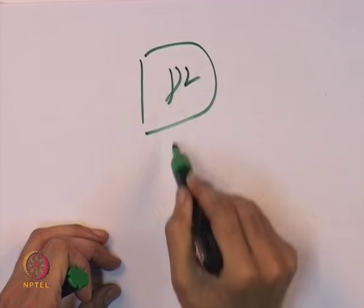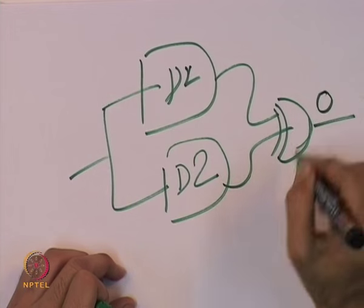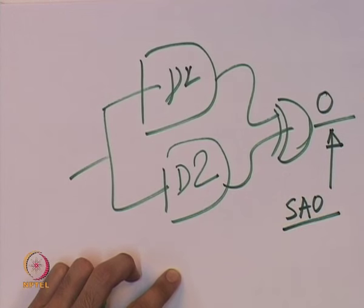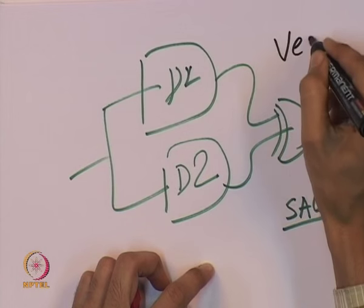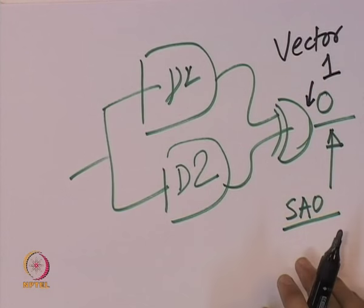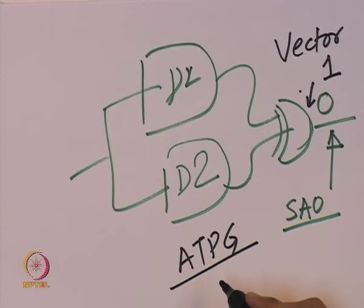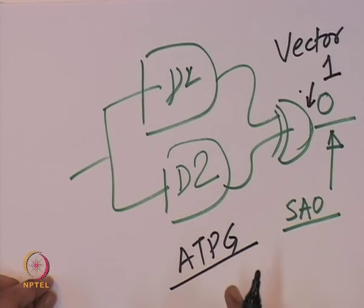The same problem can be formulated as an ATPG problem. You have design 1 and design 2; because for a given input the XOR output should always be 0, this corresponds to the output being stuck at logic 0. You need to generate a test vector that produces output 1 there. ATPG algorithms such as the D-algorithm, PODEM, and FAN algorithm can be used — these are covered in the VLSI test lecture series.